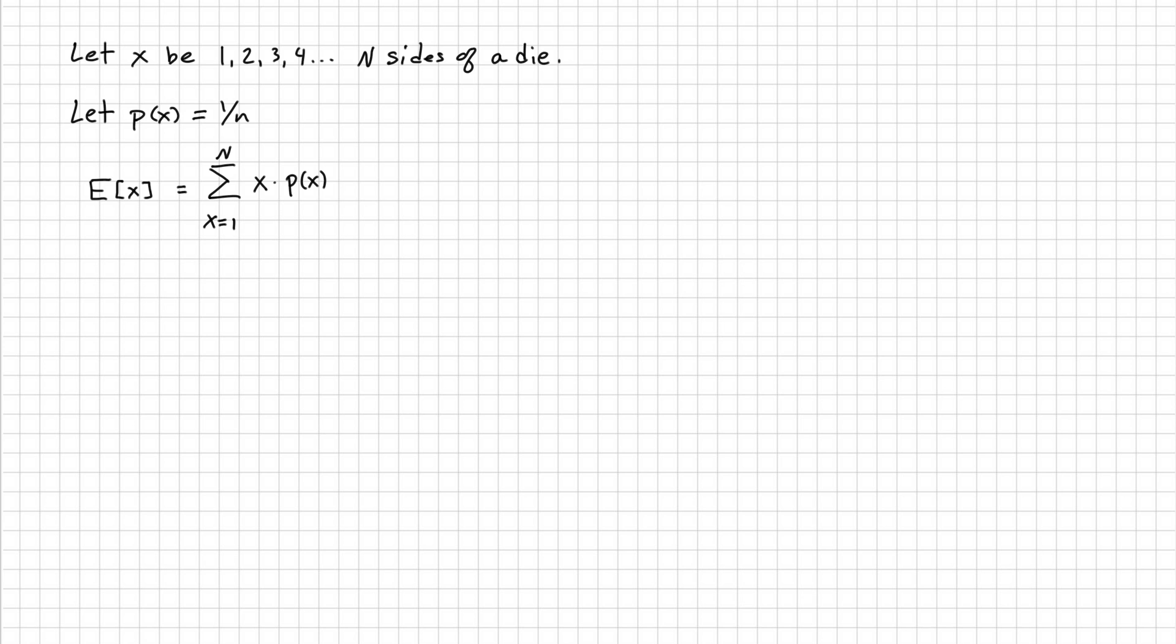This is the expected value formula. Here, you have the first side up to the n-th side, and then each side has its probability. And we're going to sum that.